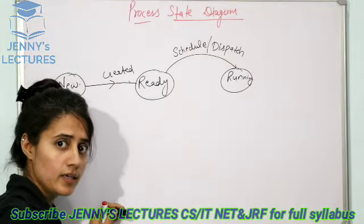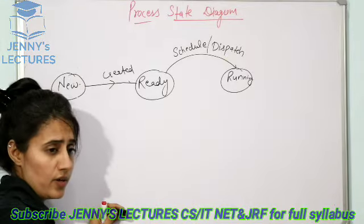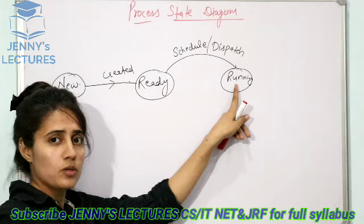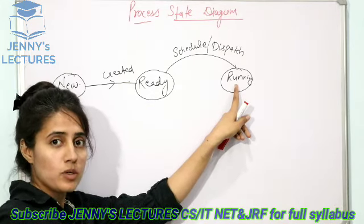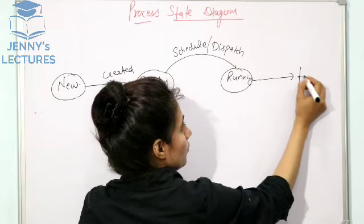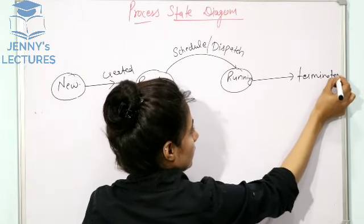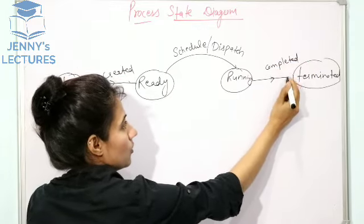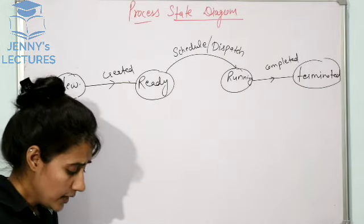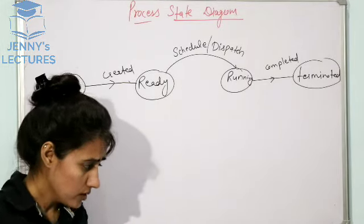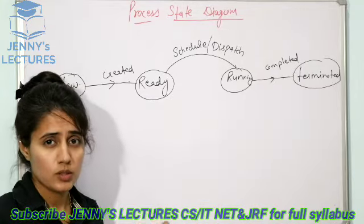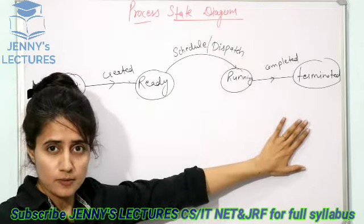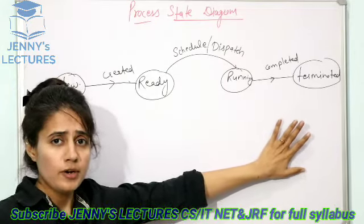After the running state, if everything goes smoothly — running means the CPU has been allocated to that process — and if the process has been completed, then it will go to the terminated state. If someone asks the minimum number of states a process can go through, the answer is four: new, ready, running, and terminated.